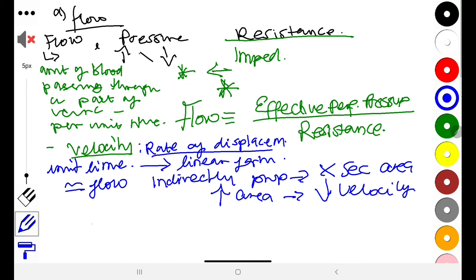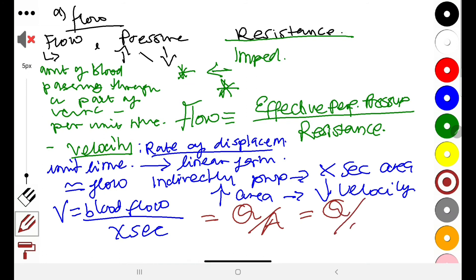Velocity is equal to blood flow divided by the cross-section, which is the same as Q over A, or also Q over πr².